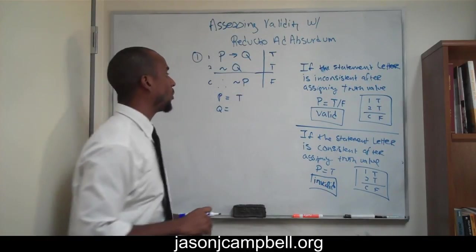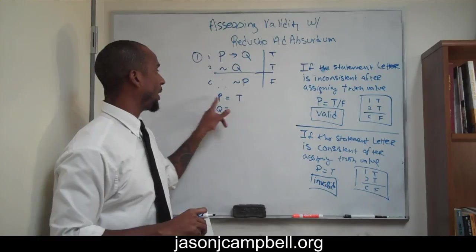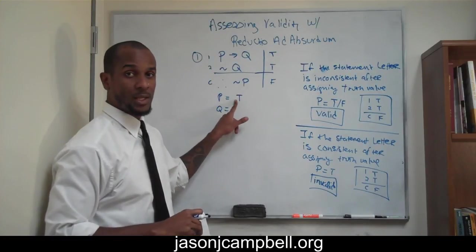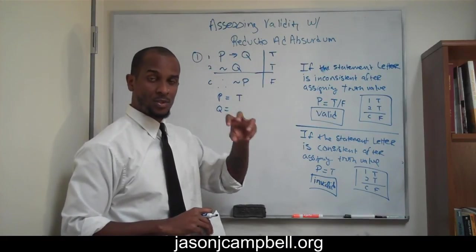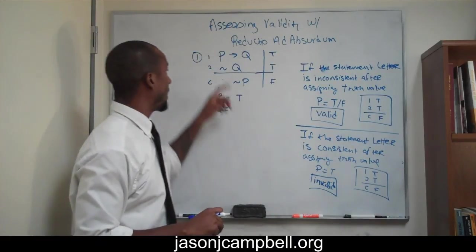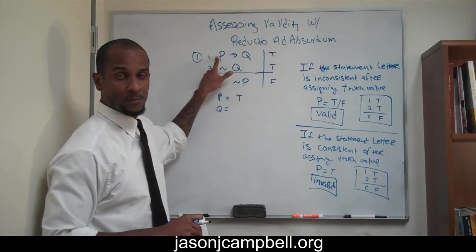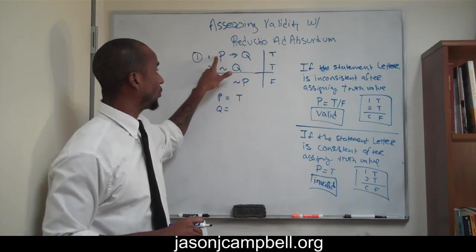So that anywhere we see P, what we do now is we plug in the truth value true. Anytime we see P in the argument, we substitute P with true. So we know that this has to be true. We know that this P has to be true. Well, that won't be a problem.